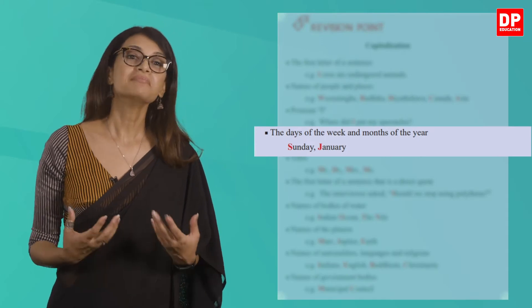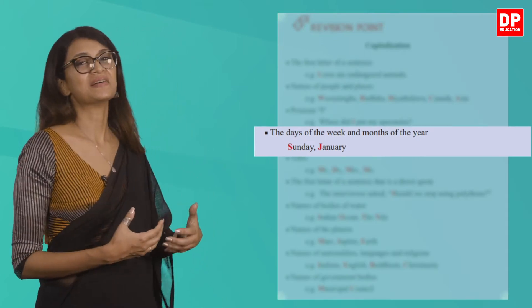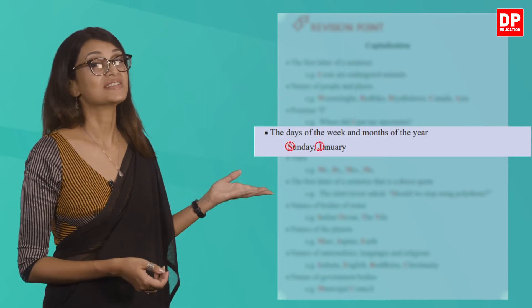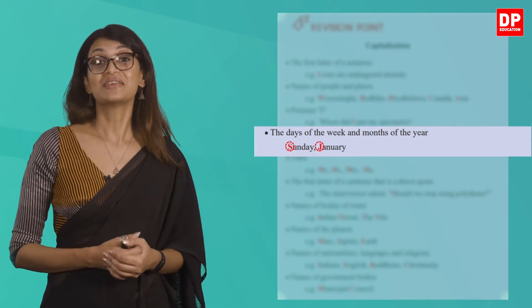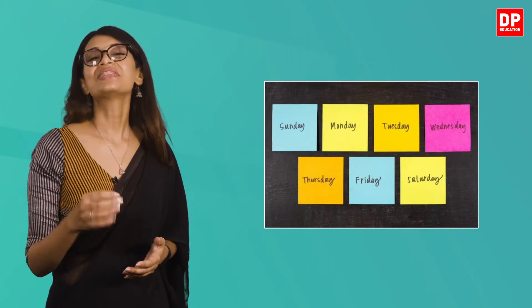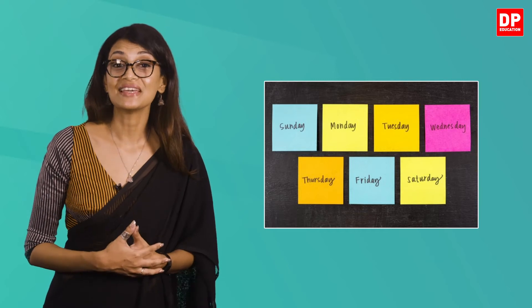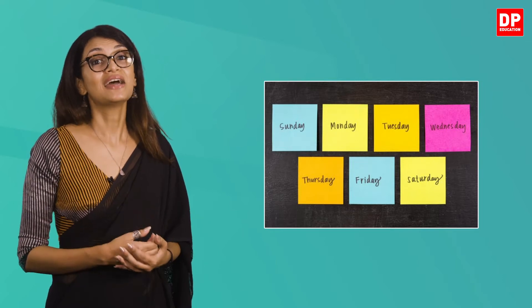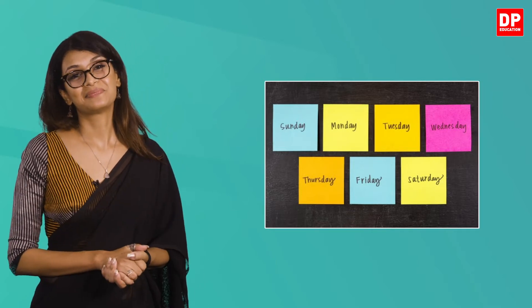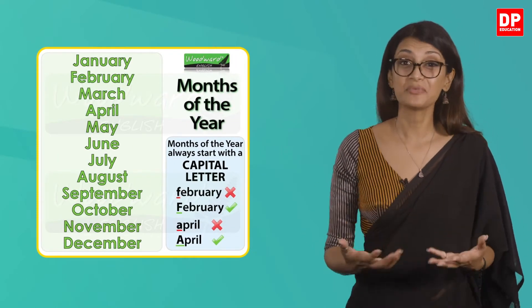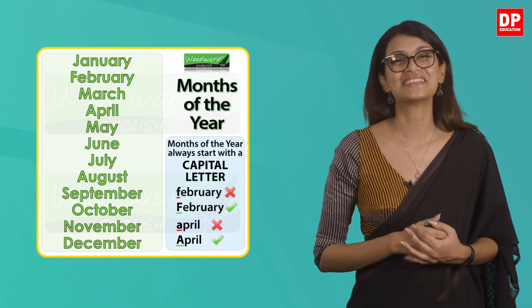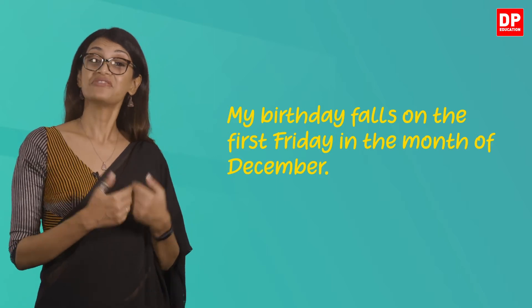The next rule is that you need to capitalize the first letter of the days of the week and months of the year. Examples given are Sunday and January — Sunday starts with a capital S and January with a capital J. The days of the week are Monday, Tuesday, Wednesday, Thursday, Friday, Saturday, and Sunday. The months of the year are January, February, March, April, May, June, July, August, September, October, November, and December.